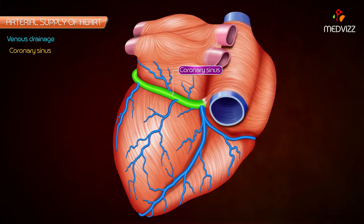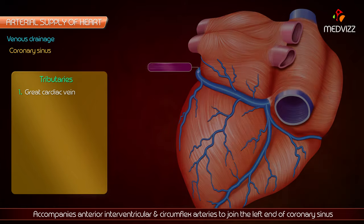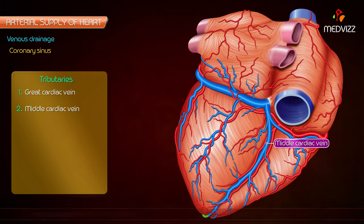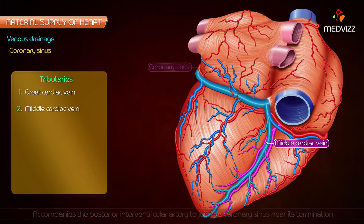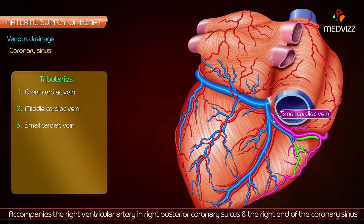Tributaries of the coronary sinus: the great cardiac vein accompanies the anterior interventricular and circumflex arteries to join the left end of the coronary sinus. The middle cardiac vein accompanies the posterior interventricular artery to join the coronary sinus near its termination. The small cardiac vein accompanies the right ventricular artery in the right posterior coronary sulcus and joins the right end of the coronary sinus.